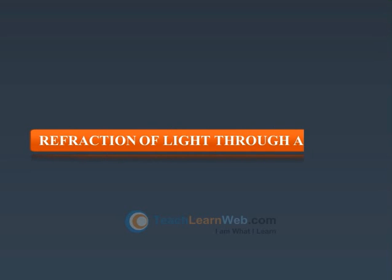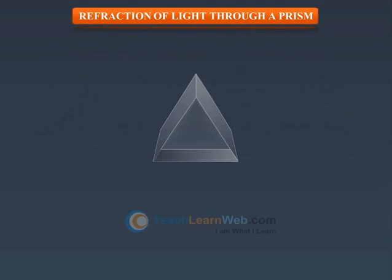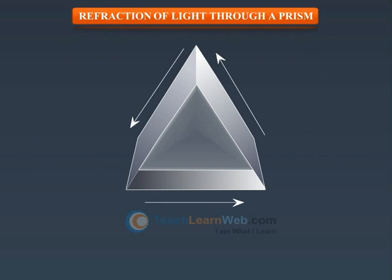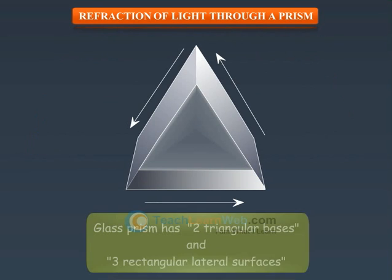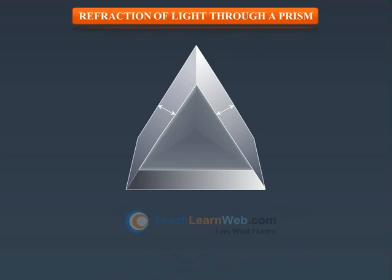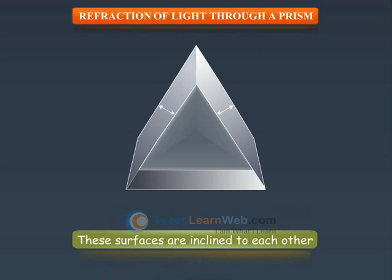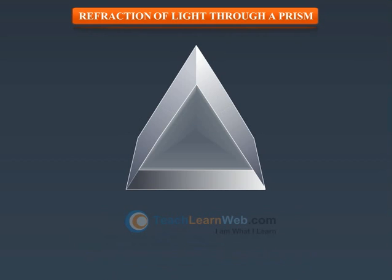A glass prism is a triangular object with two triangular bases and three rectangular lateral surfaces. These surfaces are inclined to each other. The angle between its two lateral faces is called the angle of prism.